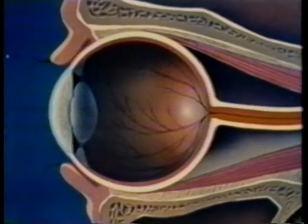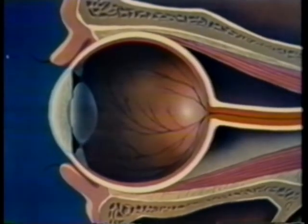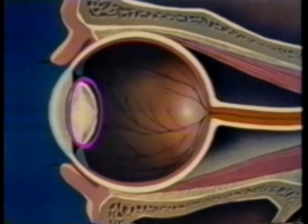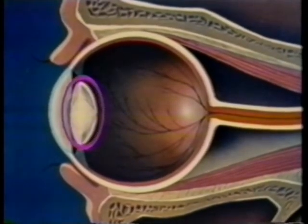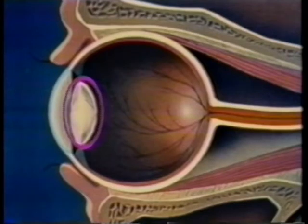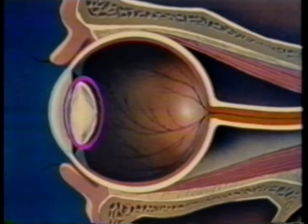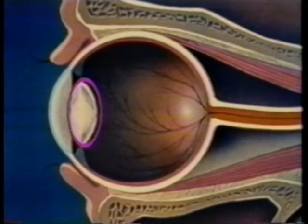Let's look first at how nature does it. The convex lens in the eye is flexible. This enables muscles to change its shape, making it thicker or thinner. The shape affects the amount of bending of the light passing through it. The thicker lens enables us to see objects close up. The thinner lens is used for distance viewing.